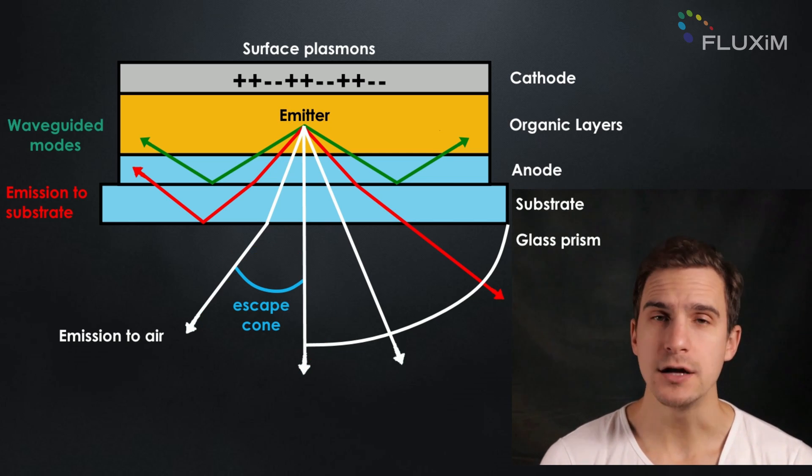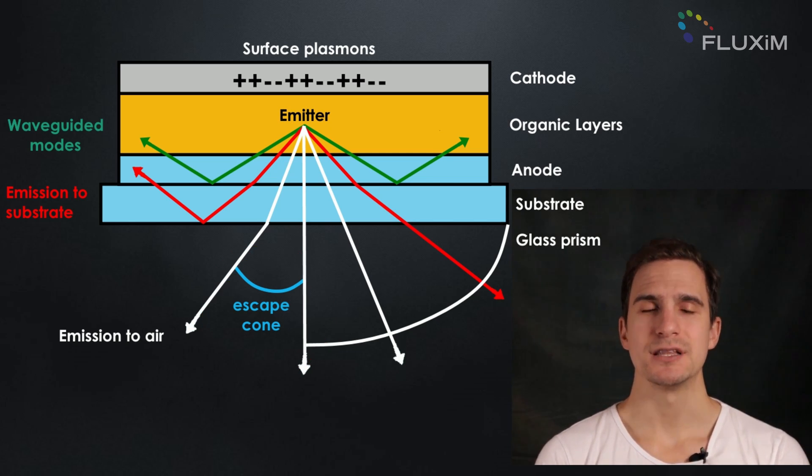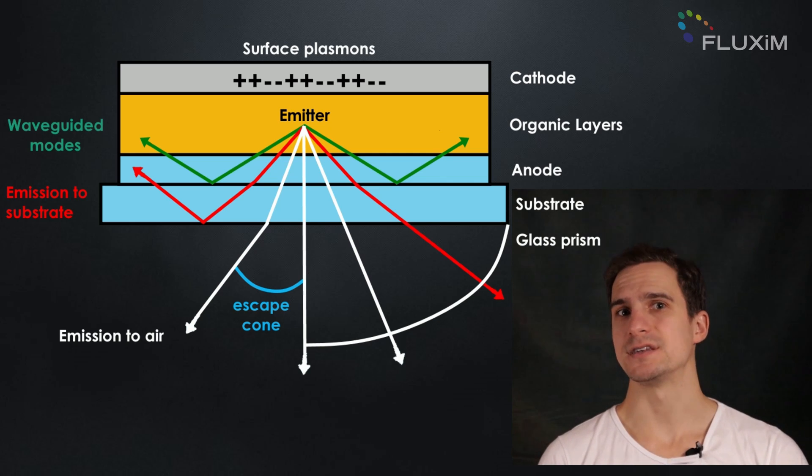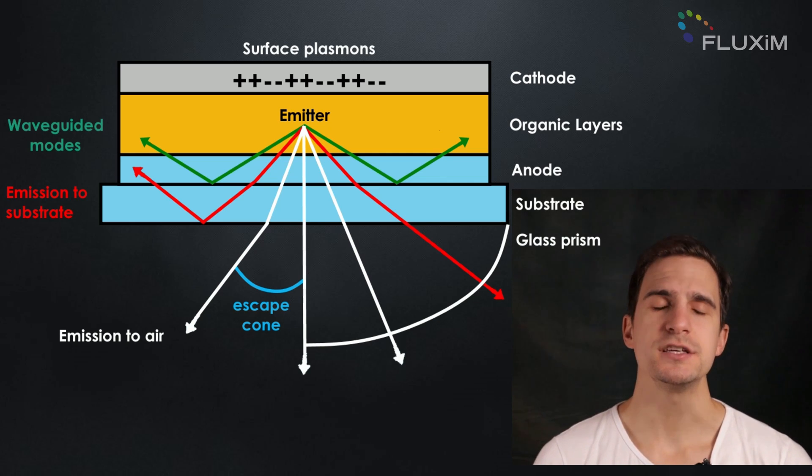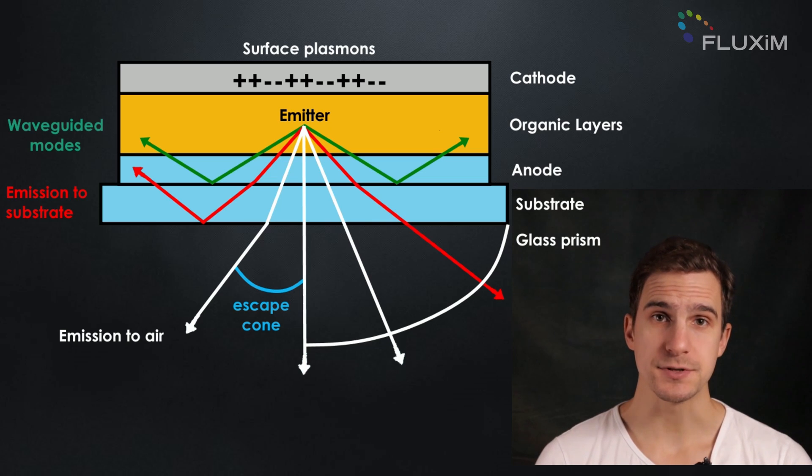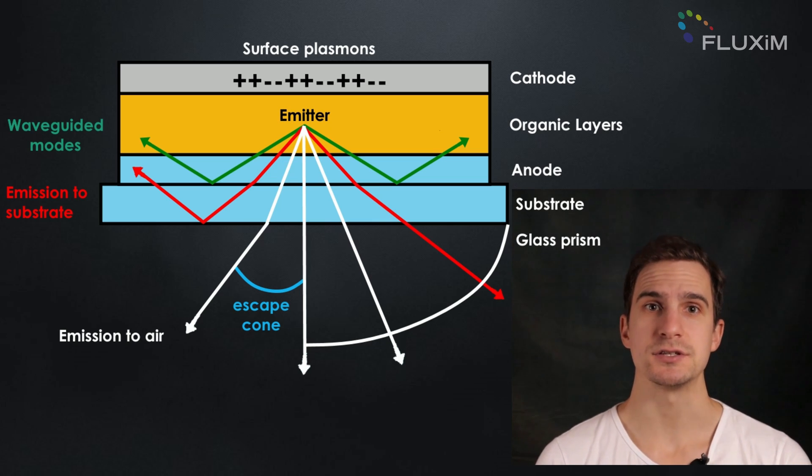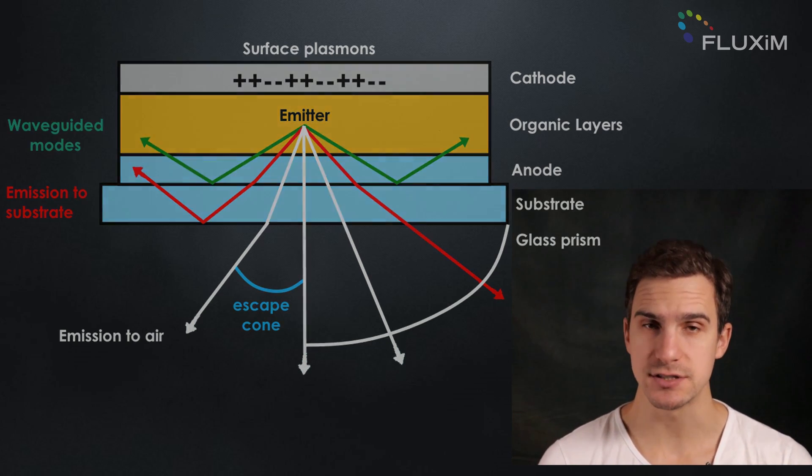While an IQE of 100% can already be achieved, the best EQE for OLED devices is less than 30%. This means that more than 70% of the generated light intensity of the device is not emitted outside of it.